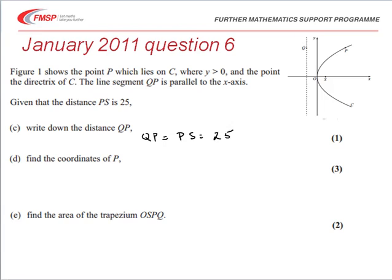The coordinates of P, or the x-coordinate of P, is just that distance 25 minus the value of the distance from the y-axis to the directrix. So it's 25 minus 9, which gives us a value of 16 for the x-coordinate.